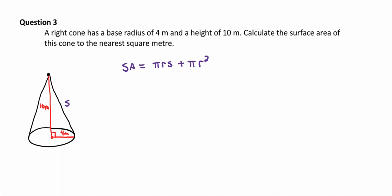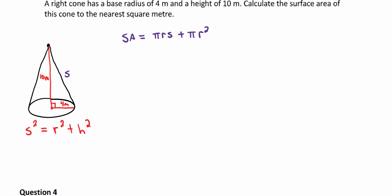Using the Pythagorean theorem adapted for the cone: s² = r² + h². So s² = 4² + 10² = 16 + 100 = 116, giving s = √116. We leave it as √116 for maximum accuracy when substituting into the surface area formula.